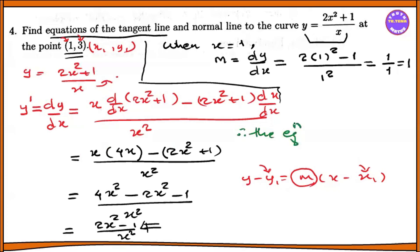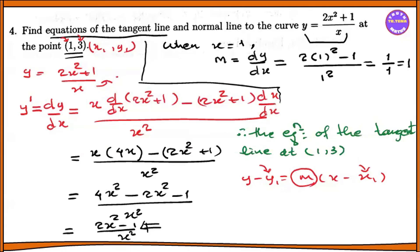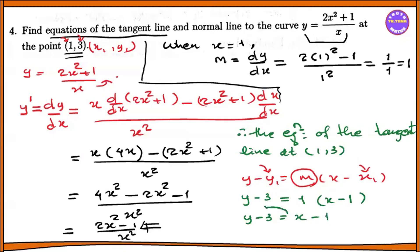Therefore, the equation of the tangent line at the point (1, 3) is: y minus y1 equal to m into x minus x1. So y minus 3 equal to 1 times x minus 1. This gives y minus 3 equal to x minus 1, so minus x plus y equals minus 1 plus 3, which gives x minus y equal to minus 2, or y equals x plus 2.